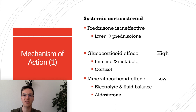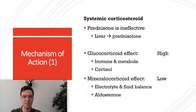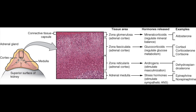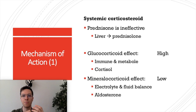Prednisone is a systemic corticosteroid but is inactive. When you take the medication it goes through your stomach into your intestines, is absorbed, then brought to the liver where it's metabolized to prednisolone, which is the active form. Like all systemic corticosteroids, prednisolone has two types of effect: a glucocorticoid effect on the one hand, and a mineralocorticoid effect on the other. The glucocorticoid effect works mostly on your immune system and metabolism, much like your body's own cortisol, while the mineralocorticoid effect works on fluid and electrolyte balance, much like aldosterone.